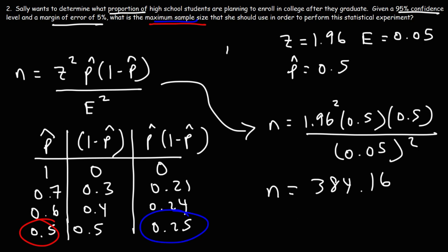Now we want to determine the maximum sample size and we can only use a whole number. So we're going to round this up to 385. So that's the sample size that we want to use given a 95 percent confidence level and if we want the margin of error to be 5 percent using a sample proportion of 0.5.